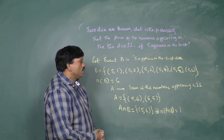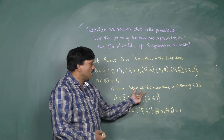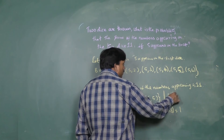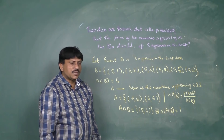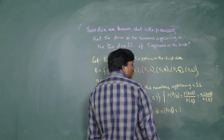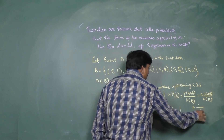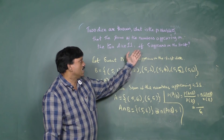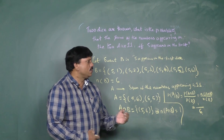The conditional probability P(A|B) — the probability that the sum is 11, given that five appears on the first die — is given by P(A∩B) / P(B), which equals N(A∩B) / N(B) = 1/6. So the probability is one by six. This is how we solve problems using conditional probability.